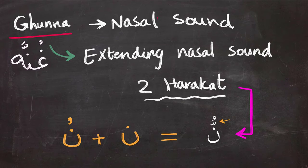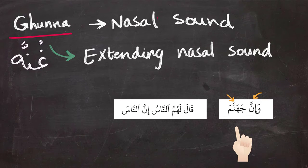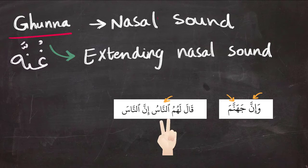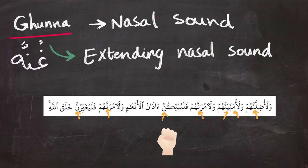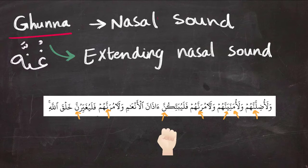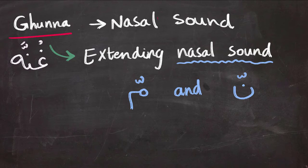Ghunnah happens when noon has shaddah on top of it — in other words, noon sakinah plus another noon that has a short vowel on top or under. Ghunnah also applies to Mim with shaddah since it is also a nasal sound.